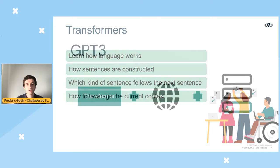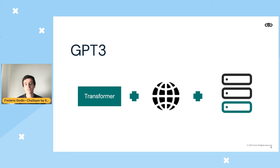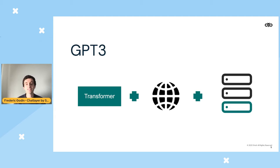In a nutshell, three things made GPT-3 possible: the transformer architecture, a lot of data from the internet, and a lot of compute — thousands of servers processing data simultaneously to train this advanced AI model. To give you an idea of the scale, the total cost for training GPT-3 is estimated to be around 10 million US dollars.